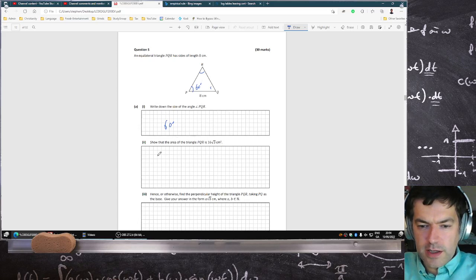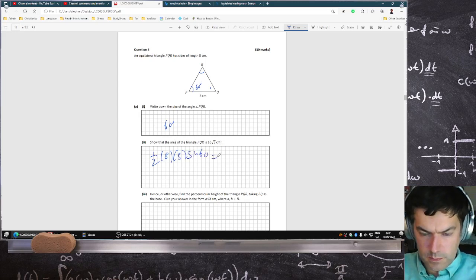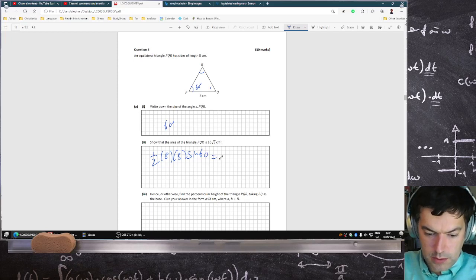So the area of the triangle - the formula for the area is a half the side by the side by the sine of the angle in between the sides.